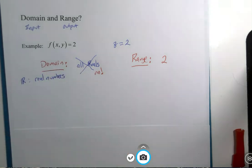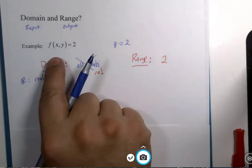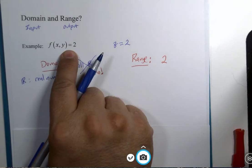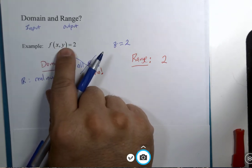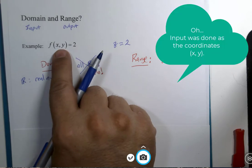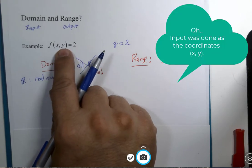You cannot call this domain all reals because all reals is short for the real numbers. And you need to know we did not plug numbers into this function. We plugged in the coordinates of a point. We plugged in two numbers, an x value and a y value, and then combined we got an answer.